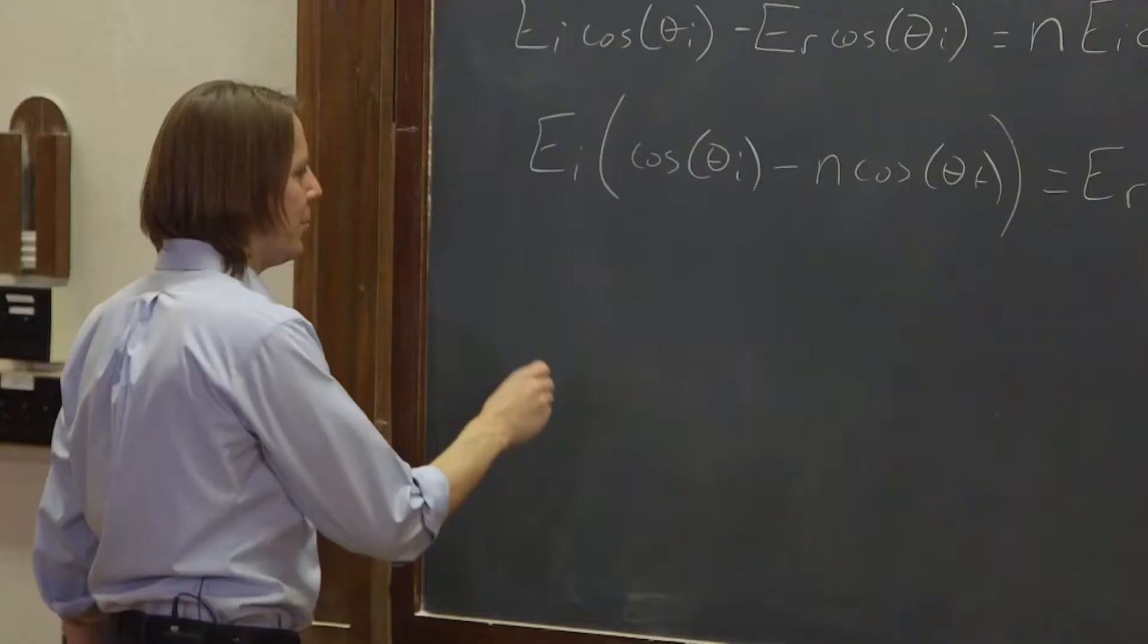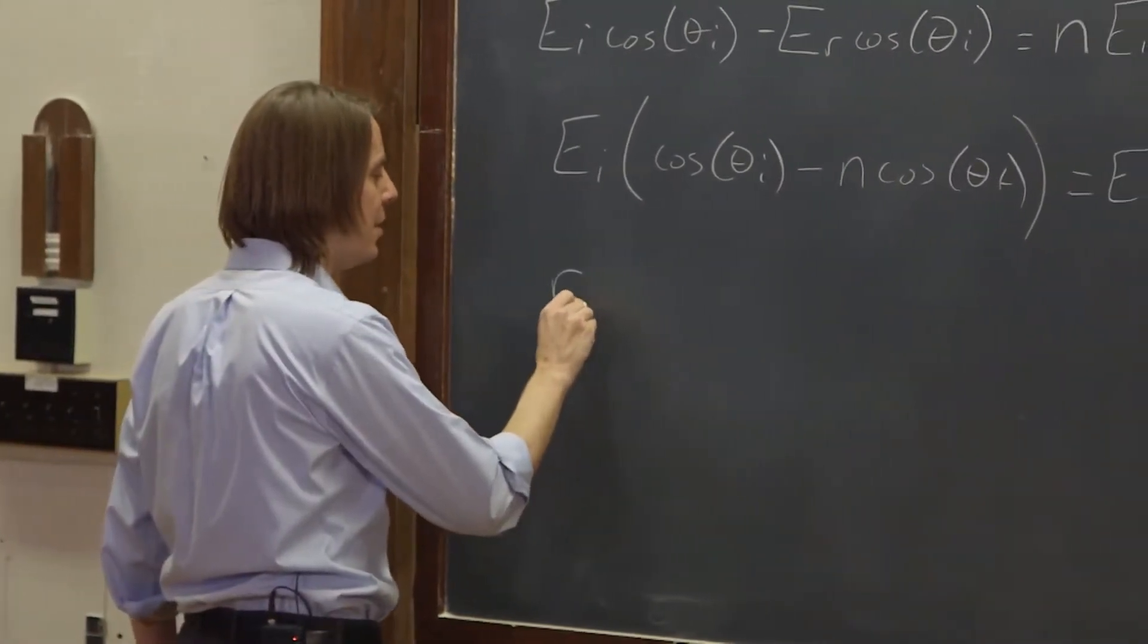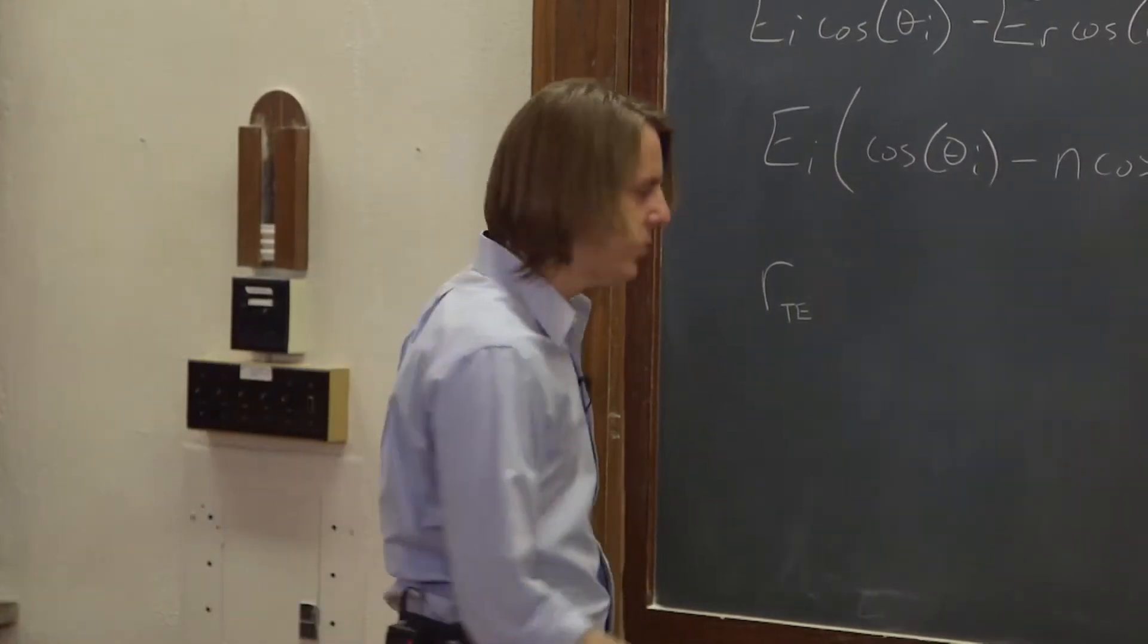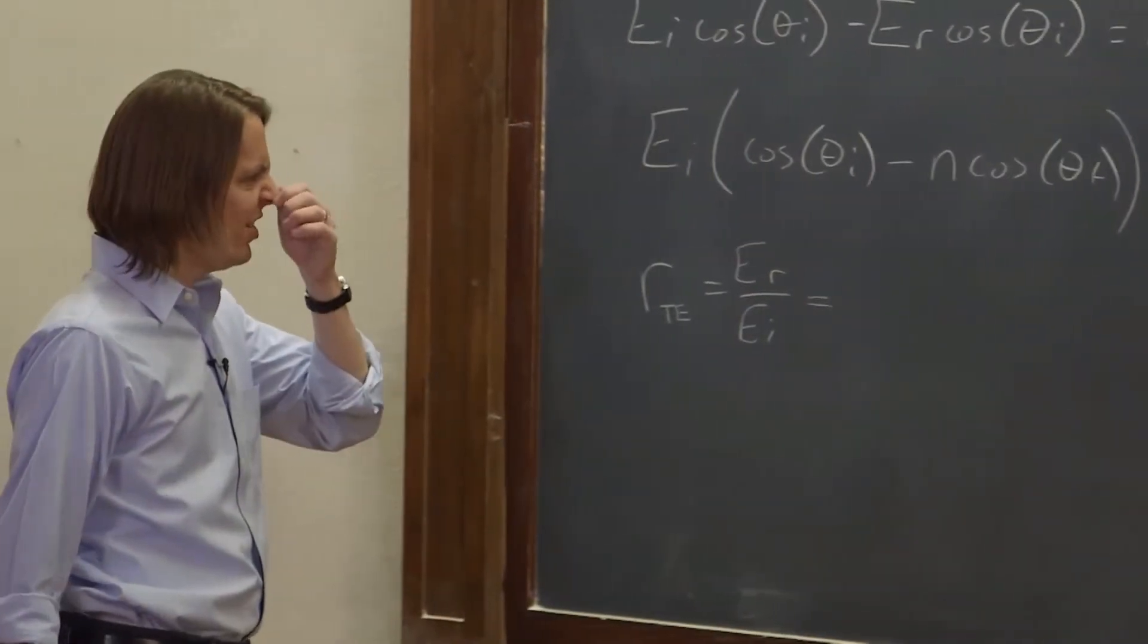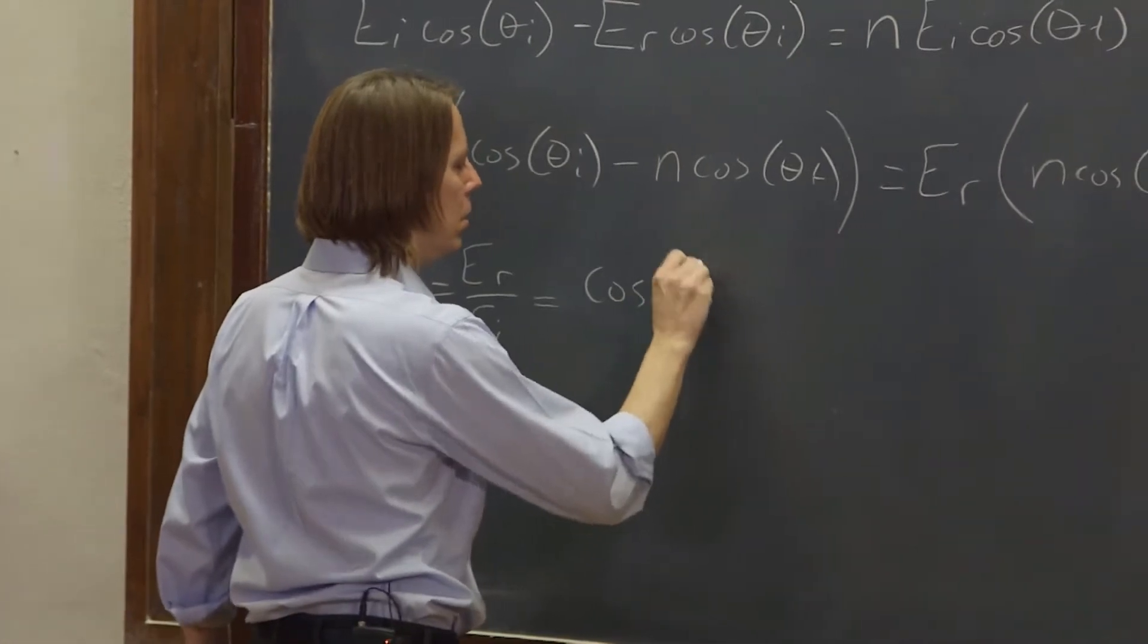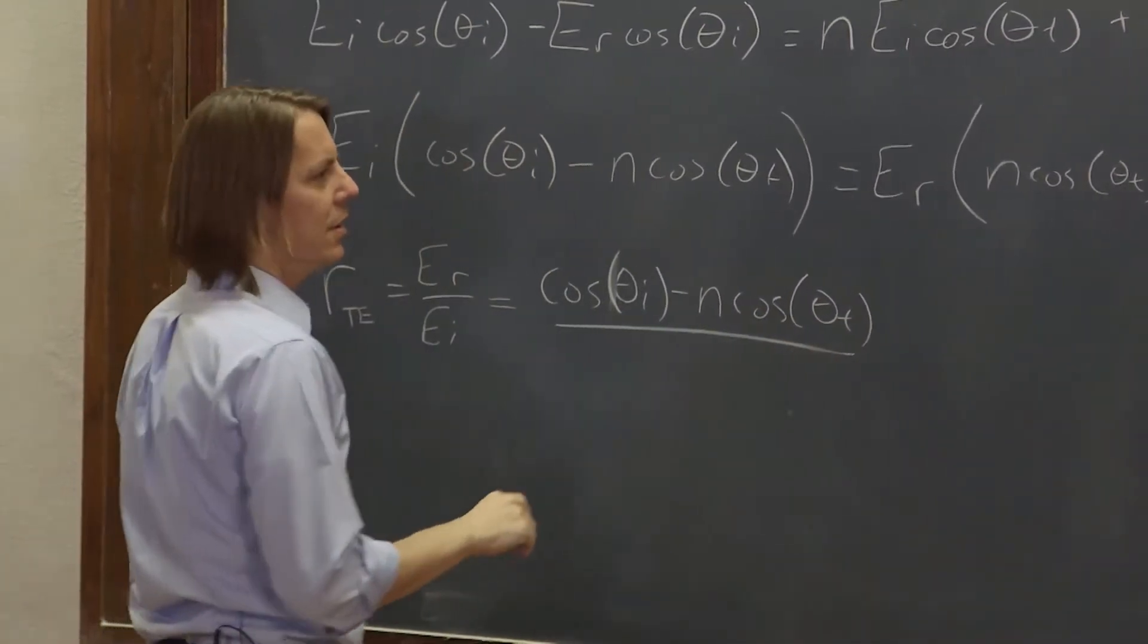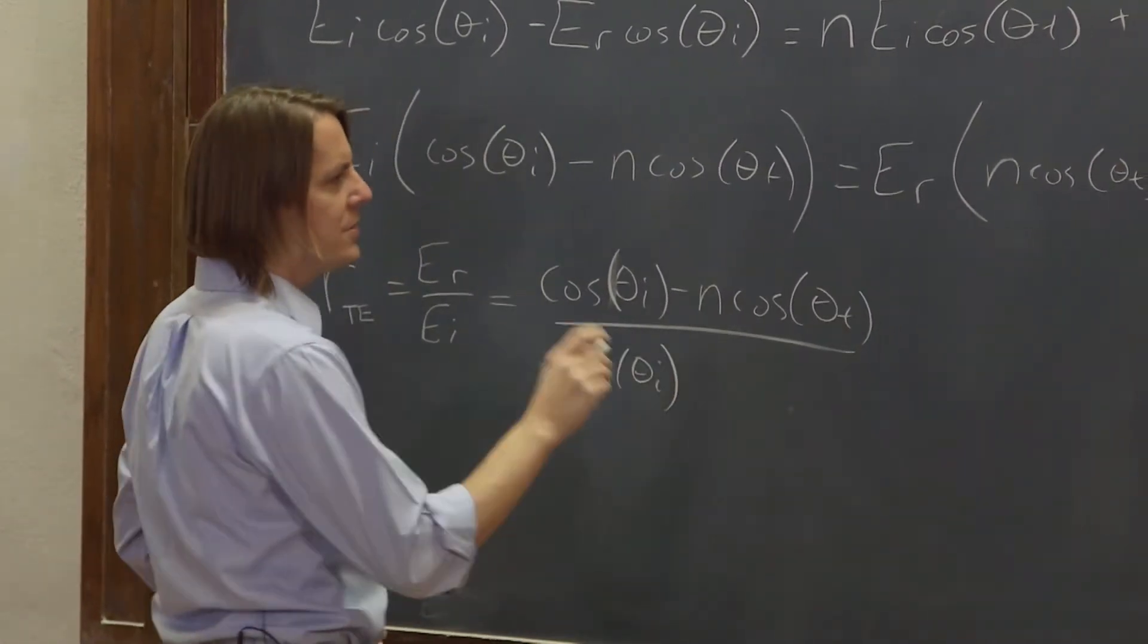So now we can write one thing we're looking for is little r, the reflection coefficient that we're trying to find. We solved it just for the TE. We've solved it for the case of a TE wave. And that's going to be ER over EI. What's that going to come out to? ER over EI is cosine θI minus n cosine θT over, let's make it sort of symmetric, cosine θI plus n cosine θT.